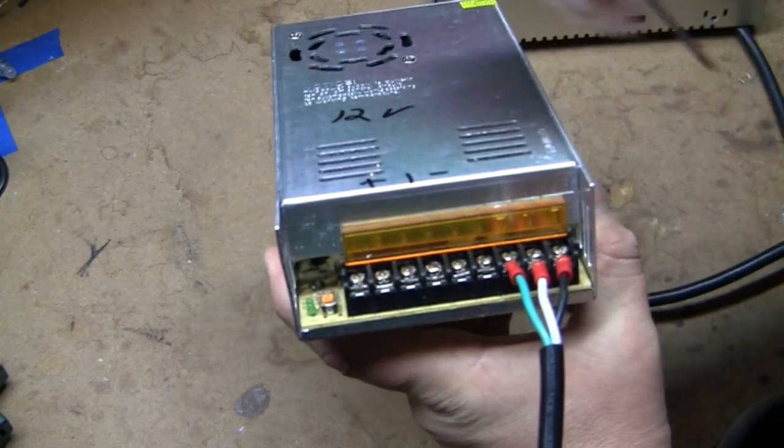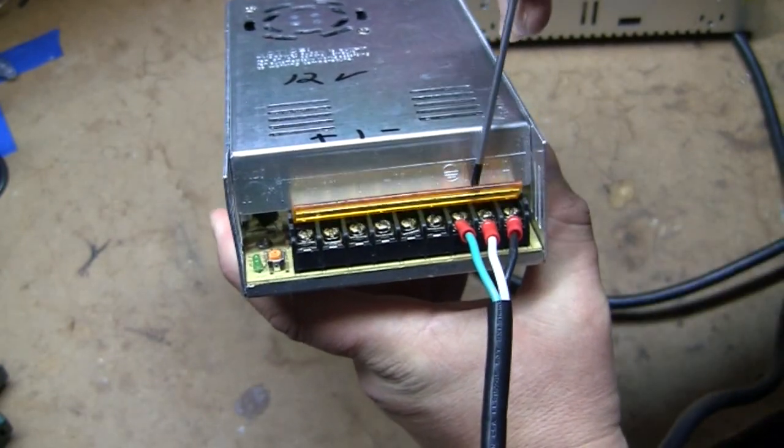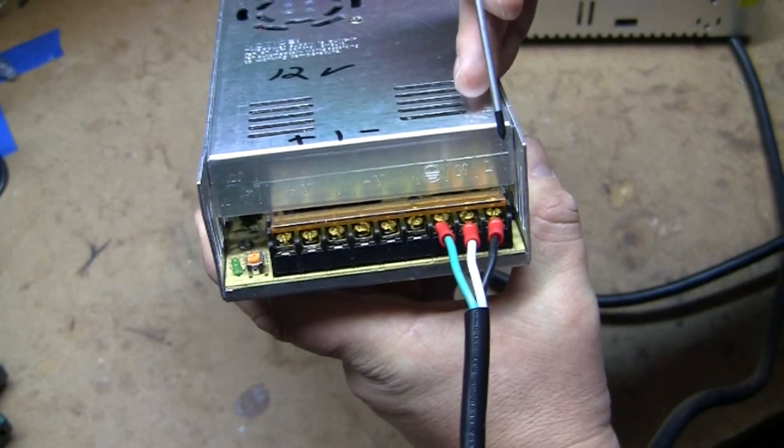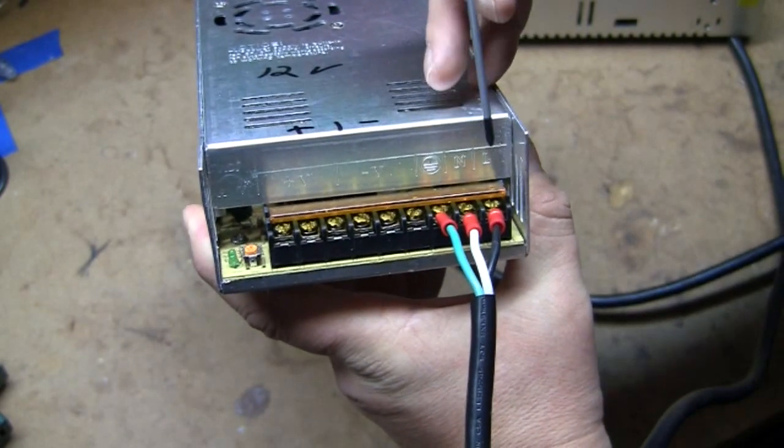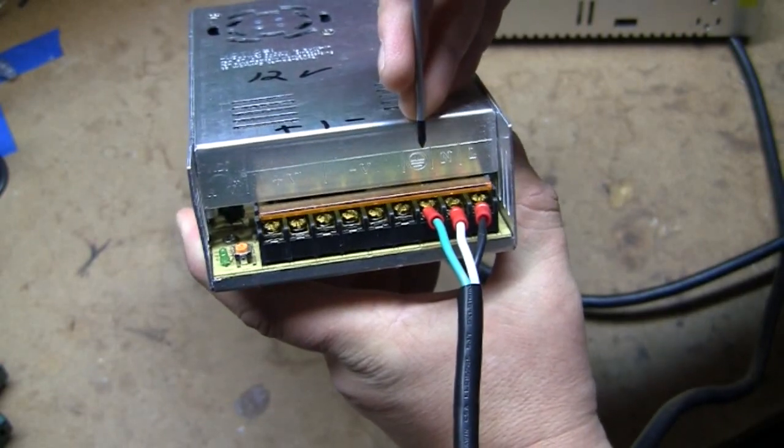The power supply has a series of screw terminals attached to it. Starting from the right hand side, you have your live wire, your neutral wire, and your ground.